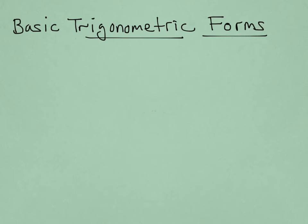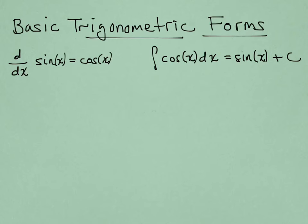We should review quickly some of the integral forms that come from the trigonometric derivatives. So for instance, if I differentiate sine, I get cosine. This means if I integrate cosine, I should get sine back. So notice how the roles get switched around.